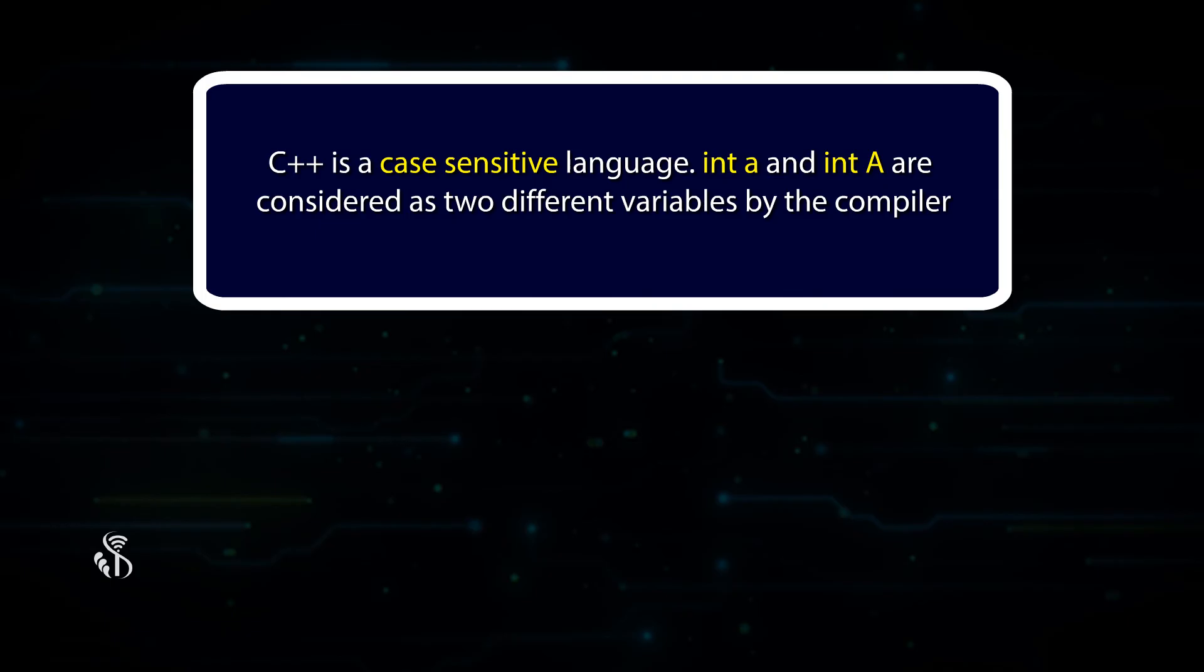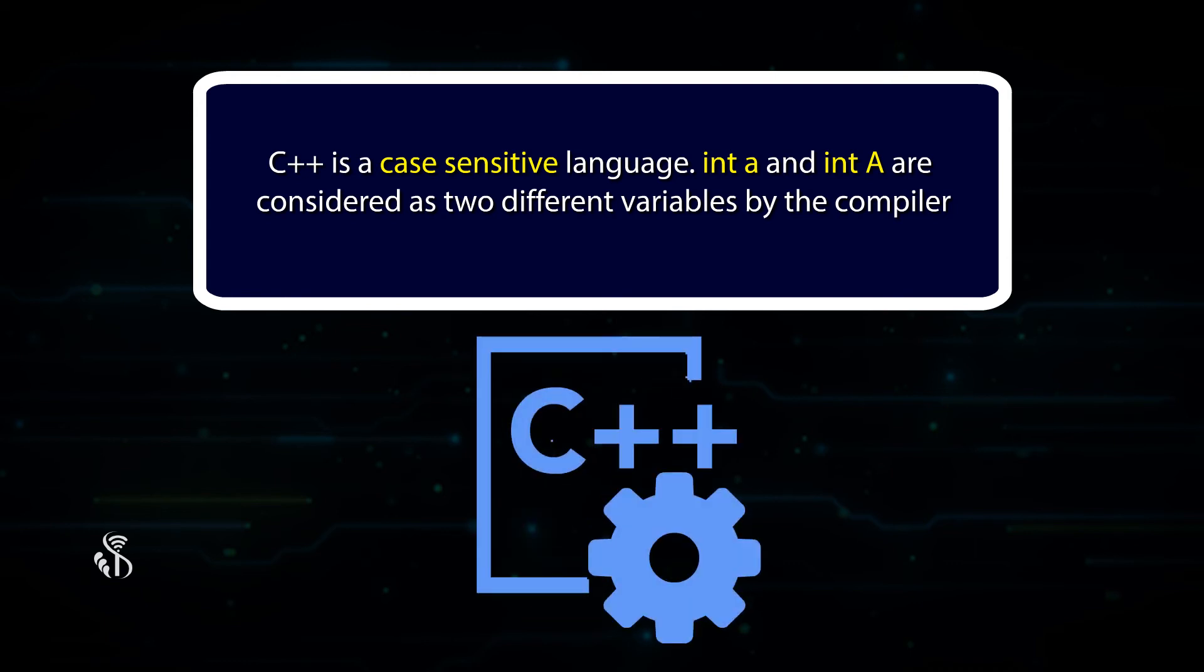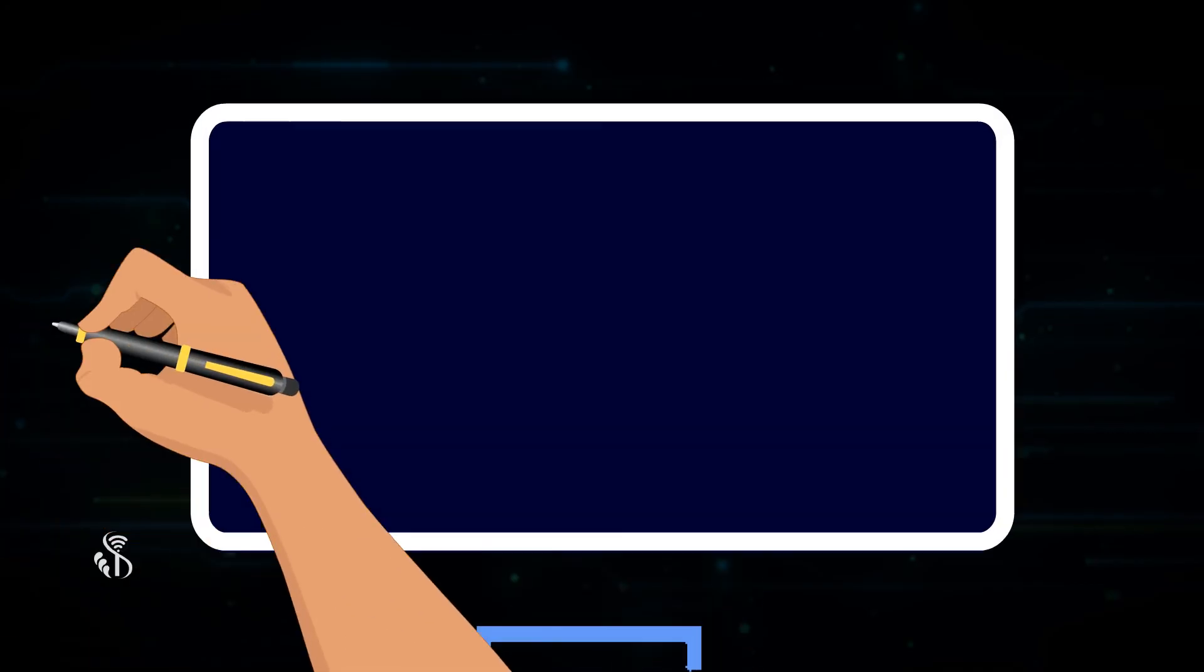C++ is a case-sensitive language. Integer small a and integer capital A are considered as two different variables by the compiler. So, pay attention to the usage of small and capital letters.